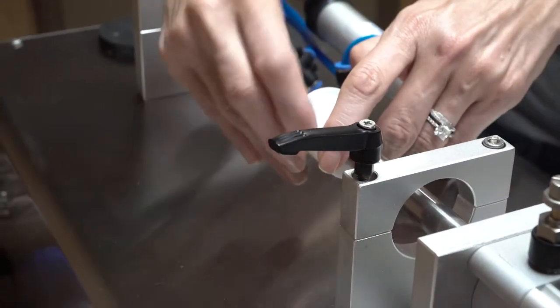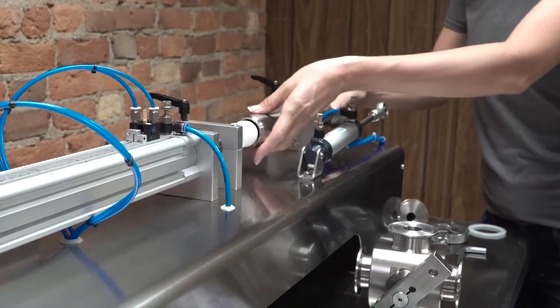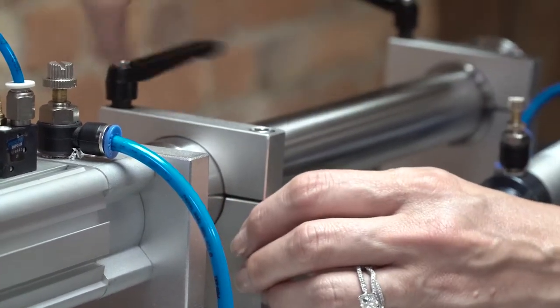Reinstall piston o-rings. Apply a small amount of lubricant to both o-rings. Install the product barrel. Tighten the black ratchet handles.